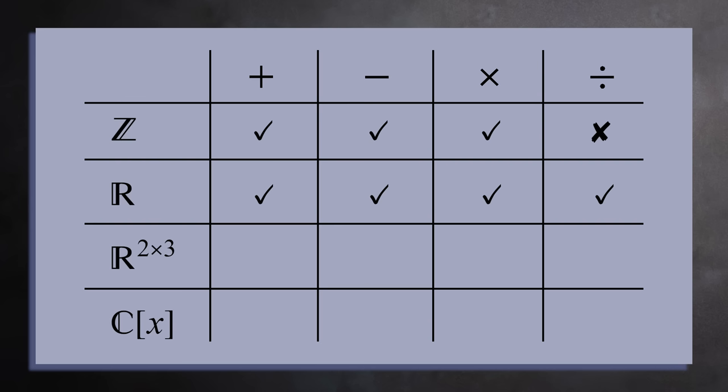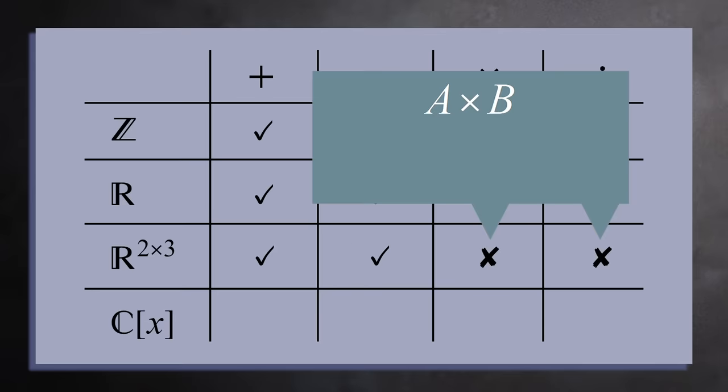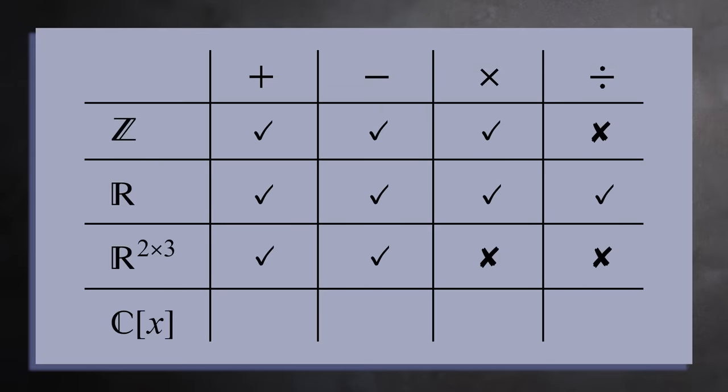For the 2 by 3 matrices you can add and subtract any two such matrices, but you cannot multiply or divide. This is because you can only multiply two matrices when the number of columns in the first matrix is the same as the number of rows in the second matrix. For example, you can multiply a 3 by 5 matrix by a 5 by 2 matrix, because the width of the first is equal to the height of the second. And to divide one matrix A by another B, we have to multiply A by the inverse of B, and not every matrix is invertible. So this set only has two of the four operations.